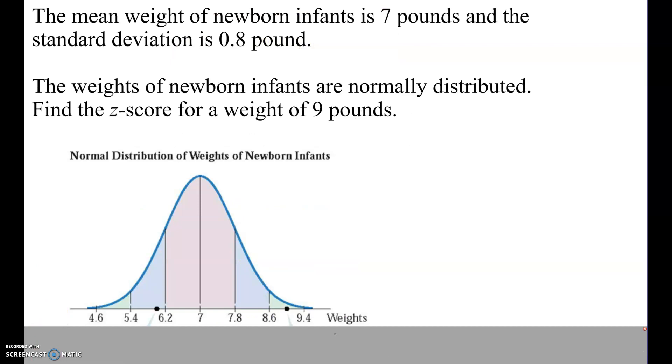In this one, we have the mean weight of newborn infants. Data can change over time. I'm not sure when this data was collected, and babies may be heavier now, but we're going to go with this for the example. The mean weight of the newborns is 7 pounds, and the standard deviation is 0.8 pounds. The weight of a newborn infant is normally distributed. It follows the normal bell curve where we are centrally gathered. We want to find the z-score for the weight of a 9-pound baby.